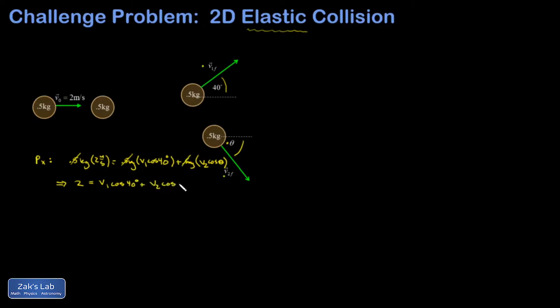Next we look at p_y. In the y direction my initial momentum is zero, so in the final state it must also be zero. Rather than writing down zero equals a difference of two things, I'm just going to say that the upward momentum's magnitude must equal the downward momentum's magnitude. So I have 0.5 kilograms moving upward at v1 sin 40 degrees, and that should equal the momentum downward from the second ball: 0.5 kilograms v2 sin theta.